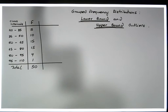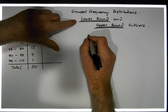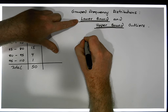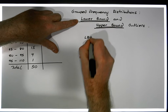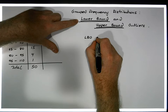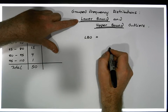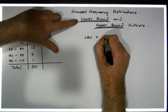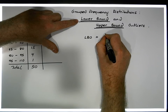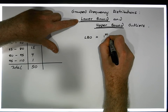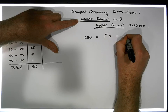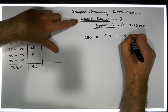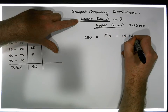We have a formula for both of these. The formula says that lower bound outliers — let's call them LBOs for lower bound outliers — are any values that are less than the first quartile minus 1.5 times the interquartile range.